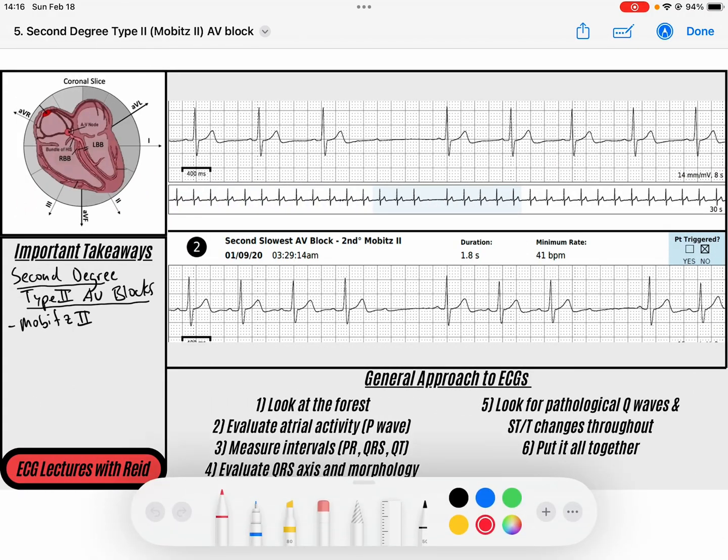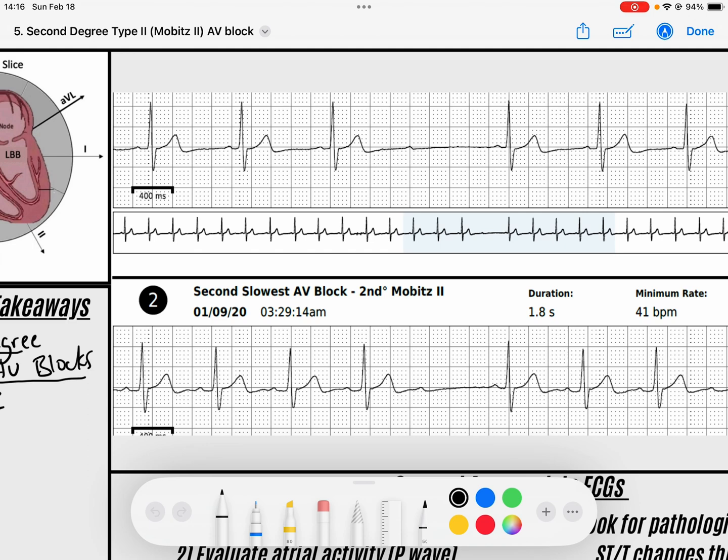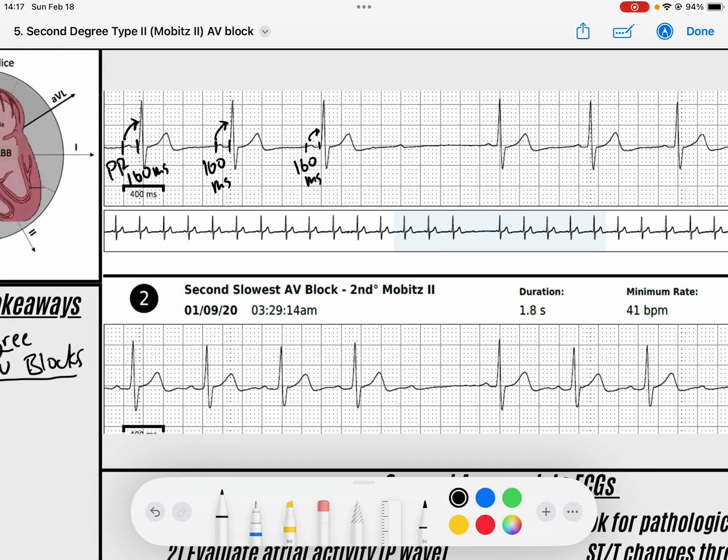That means my PR interval will stay the same until it doesn't, until the P does not conduct to the QRS. That's because the bundle of His is all or nothing conduction. These people have lesions within their bundle of His. Let's take a look. These are a couple of Holter monitors, wearable devices. What we see here is that we have this P wave conduct to a QRS, and that PR interval is normal, about 160 milliseconds. Then we see a P conduct to that QRS with a PR interval that is still 160 milliseconds. Then we have this P conduct to this QRS with a PR interval that is still 160 milliseconds, and then the next P does not conduct to that QRS.